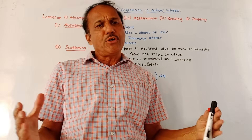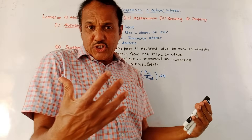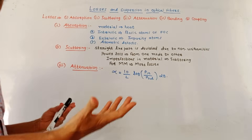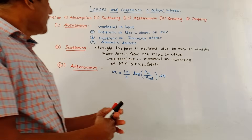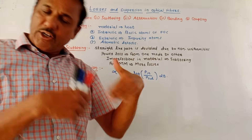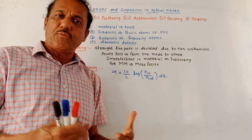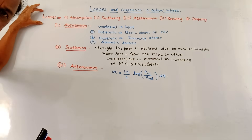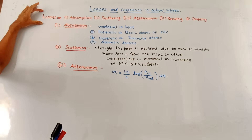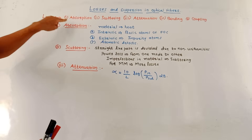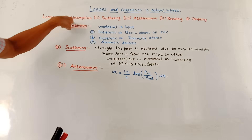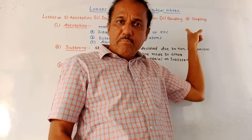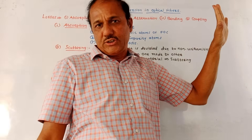From the exam point of view, you may expect a direct question related to these losses — what are the different types of losses, or explain absorption, scattering, and attenuation losses in case of optical fibers. So first let us talk about the different losses taking place in the fiber optic cable. These losses are mainly absorption losses, scattering losses, attenuation losses, bending losses, and coupling losses.